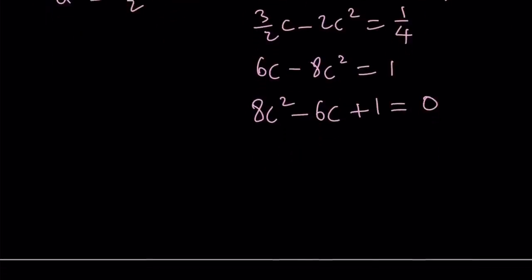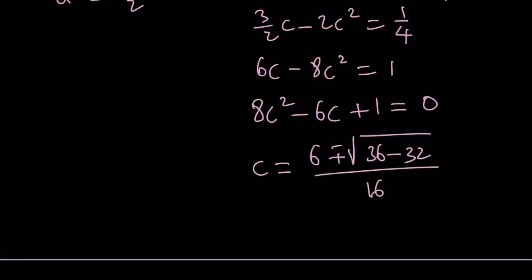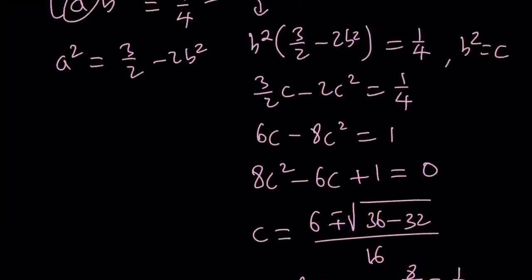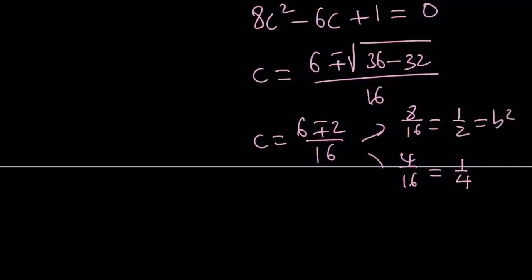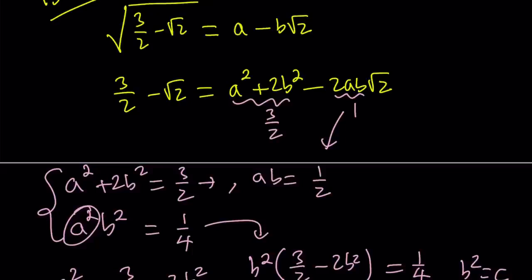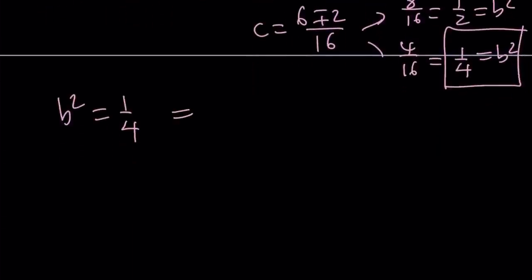Solving this equation using the quadratic formula with b² = 36, 4ac = 32, and 2a = 16: we get c = (6 ± 2) / 16, which is either 8/16 = 1/2 or 4/16 = 1/4. Since we need b² = c to give rational values for b, and we want a and b to be positive, we go with b² = 1/4.